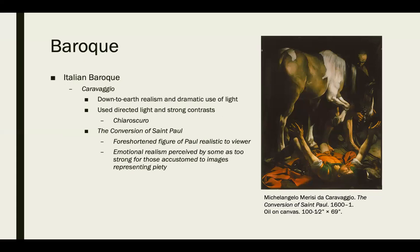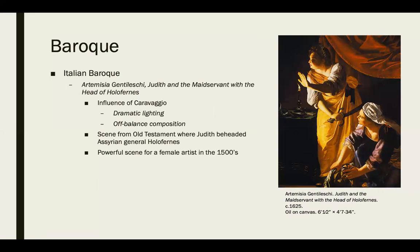Caravaggio is one of the biggest names in art history. He's an Italian Baroque artist who uses extreme chiaroscuro — a dramatic light source coming from the side, with the rest of the painting in near-total darkness. His paintings are usually biblical scenes but depicted very dramatically, with extreme foreshortening. This is called emotional realism, perceived by some as too intense compared to the calmer, pious imagery they were accustomed to.